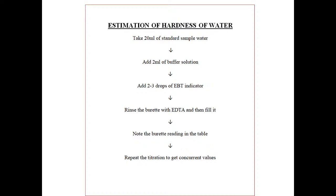After adding the standard sample water and 2 ml of buffer solution, add 2 to 3 drops of EBT indicator. Then rinse the burette with EDTA solution, then fill it. Rinsing the burette is a very crucial step so that the pH is maintained. The ideal way is to fill the burette, empty it, then fill it again with EDTA, and then titrate. Note down the reading and repeat the titration to get concurrent values.